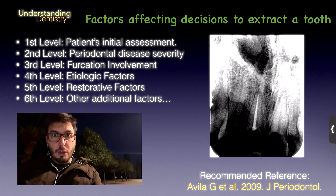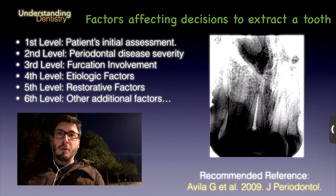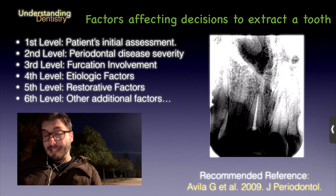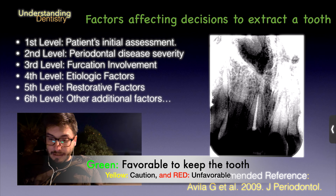This classification can also be used to assess the long-term prognosis of the teeth. The authors describe six levels. They use colors like a traffic light: green means long-term survival is favorable, yellow means proceed with caution, and red means long-term survival is unfavorable.